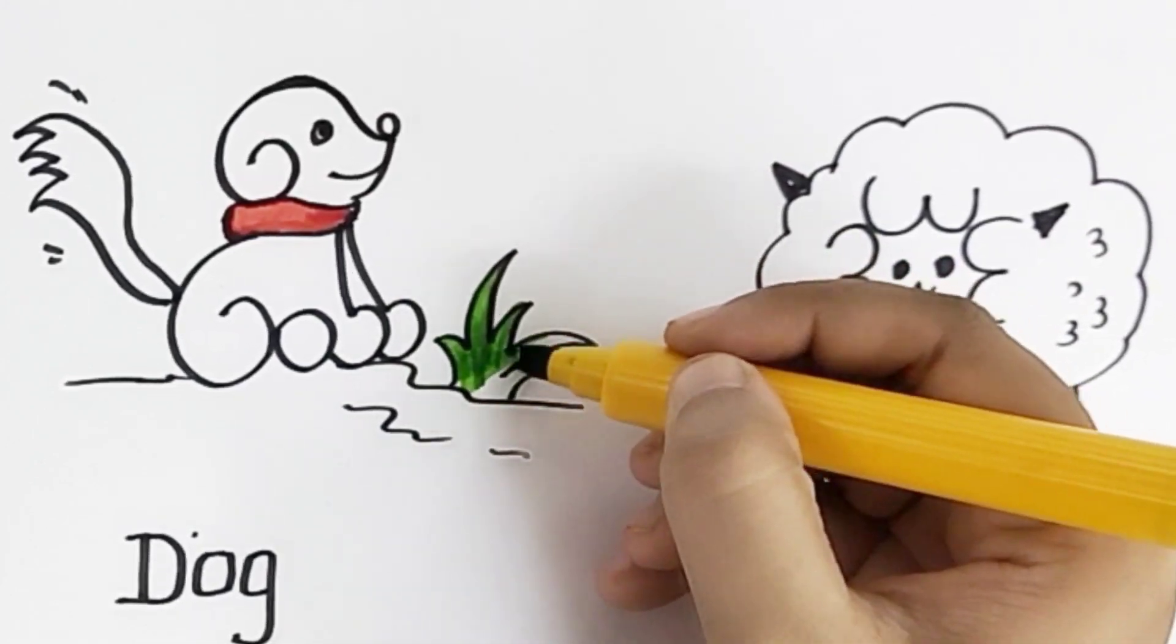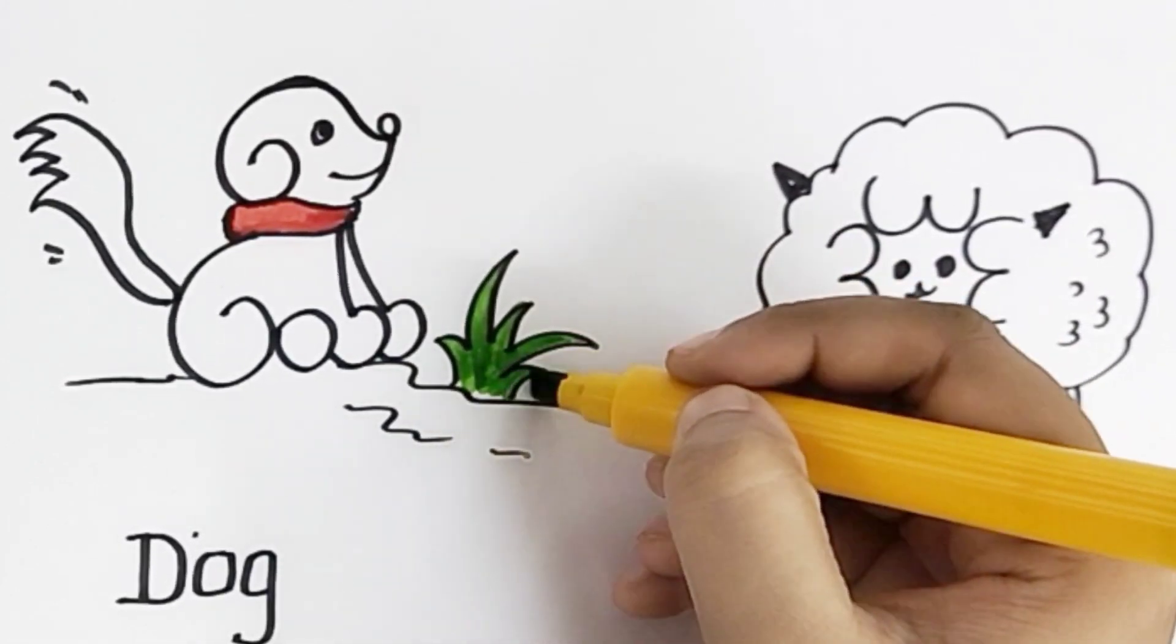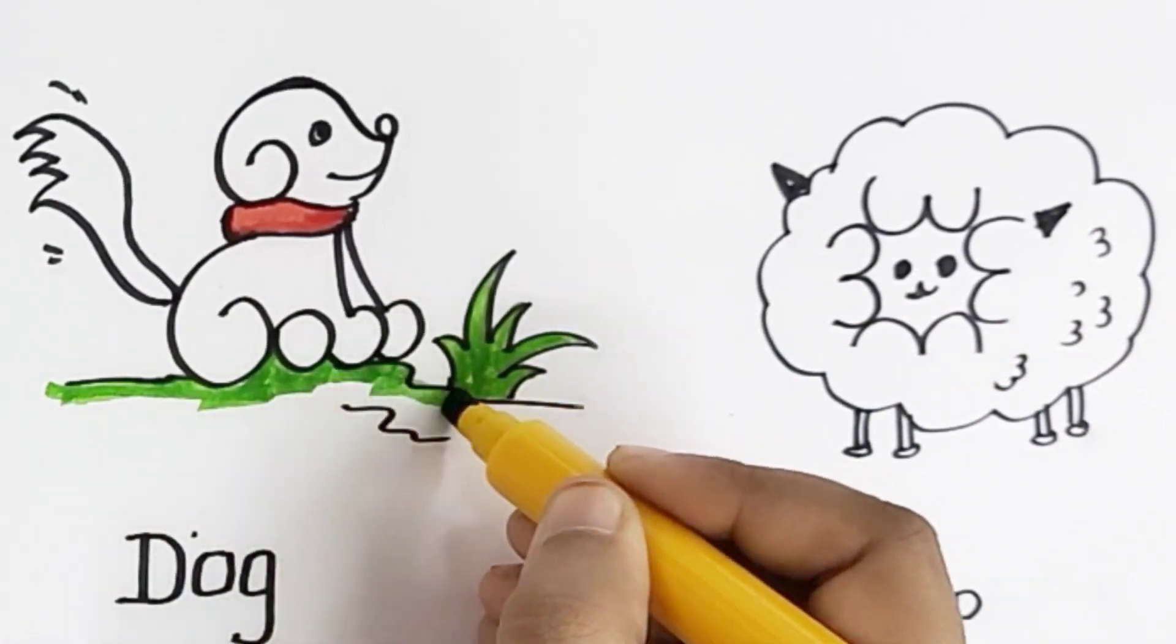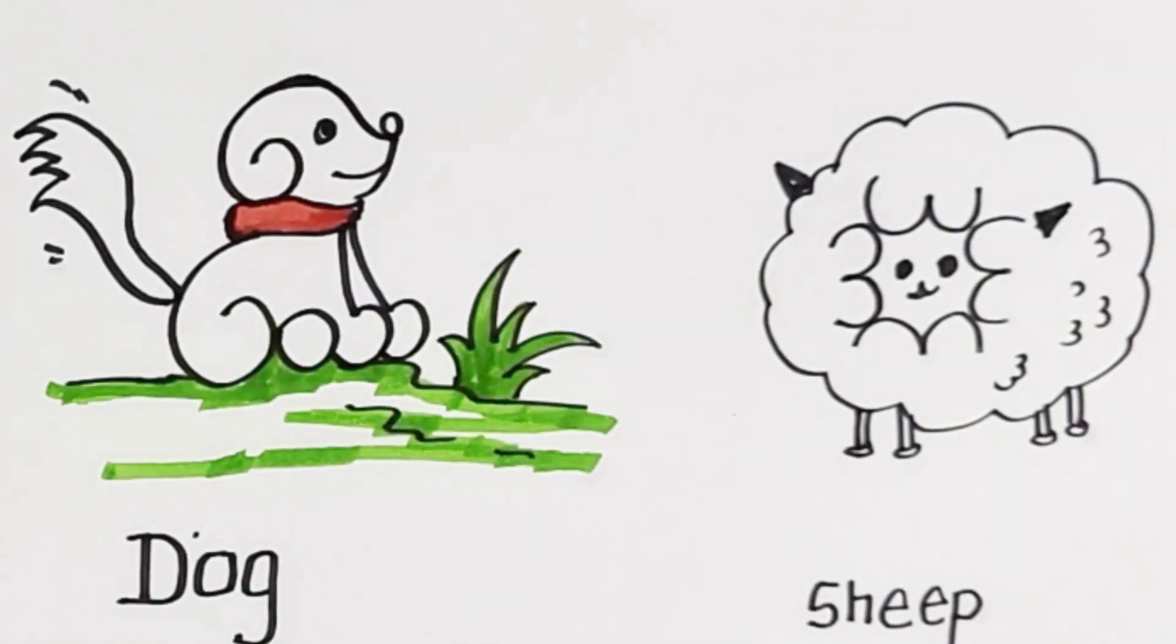Like in grass, the color doesn't come outside. It should be dark enough and do the shading properly.